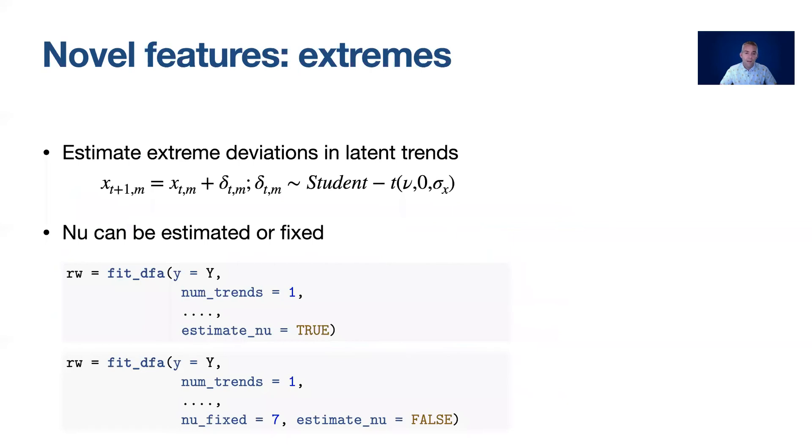Next I wanted to talk about some of the novel features of the bayesDFA package. The first obvious one is instead of modeling the deviations in the process, those latent processes, as normal deviates we model them as student t deviates. The student t distribution introduces one extra parameter, nu, which controls the flexibility of that distribution or how extreme the tails are.